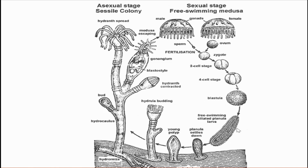We need to understand more about the planula larva. It is a free-swimming larva with an elongated, ovoid appearance; the anterior end is broader than the posterior end. It consists of two layers — ectoderm and endoderm — and the mouth is absent. Another important term is metagenesis, which is another term for alternation of generation: the existence of sexual and asexual phases in the life cycle. In the case of Obelia, the asexual phase is the polyp phase and the sexual phase is the medusoid phase. With this we finish today's class.